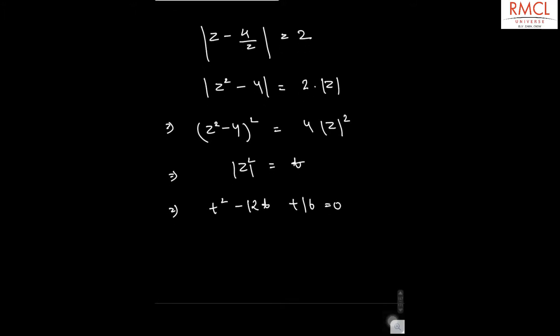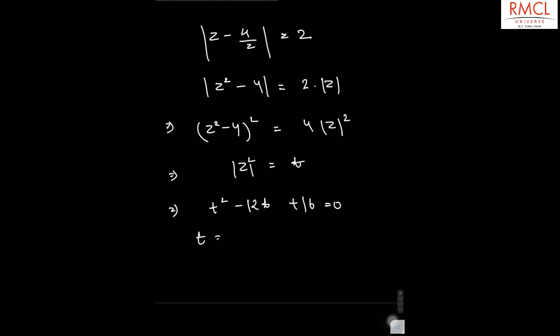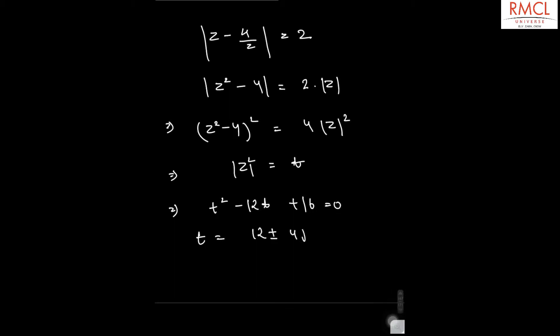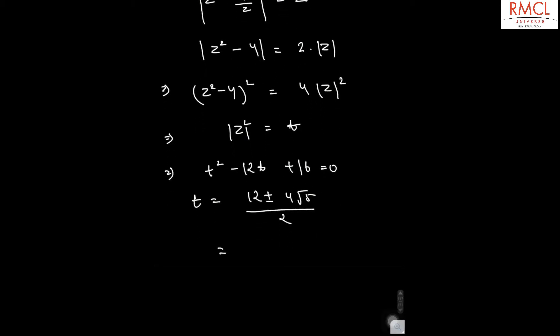So, from this equation, the values for t will be equal to 12 plus minus 4 root 5 divided by 2, which is equal to 6 plus minus 2 root 5.